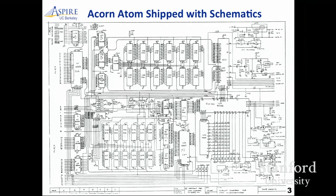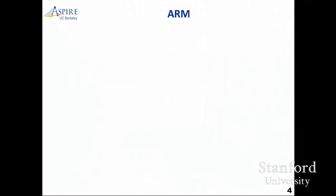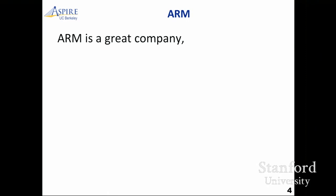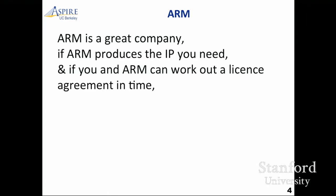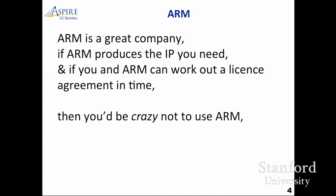The second reason is it's made by Acorn. People have tried to cast RISC-V versus ARM as David versus Goliath. I find that pretty funny. The ARM guys think it's funny too, because they think they're David fighting the other Goliath, Intel. I just want to say a few things about ARM as a disclaimer: they're a great company. If they produce the IP you need and you can work out a license agreement with them in time, you'd be crazy not to use ARM.